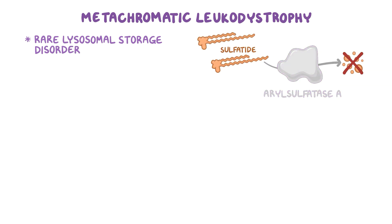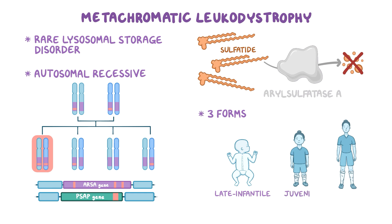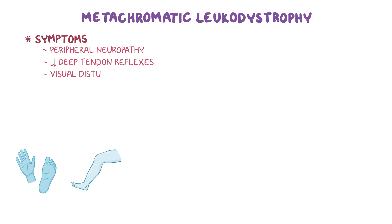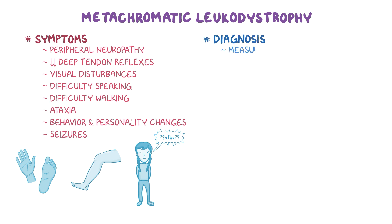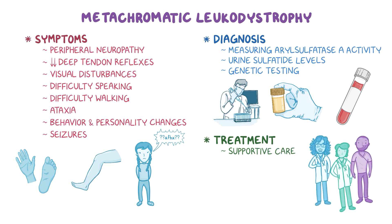As a quick recap: metachromatic leukodystrophy, or MLD, is a lysosomal storage disorder characterized by accumulation of sulfatide due to decreased activity of the enzyme arylsulfatase A. It's an autosomal recessive disorder caused by a mutation in the ARSA gene or PSAP gene. There are three forms of MLD based on age at onset — late infantile, juvenile, and adult. Common symptoms include peripheral neuropathy, diminished deep tendon reflexes, visual disturbances, difficulty speaking and walking, ataxia, behavior and personality changes, and seizures. MLD is diagnosed by measuring arylsulfatase A activity, urine sulfatide levels, and genetic testing. Treatment involves supportive care and stem cell transplantation.